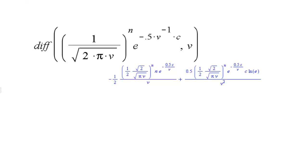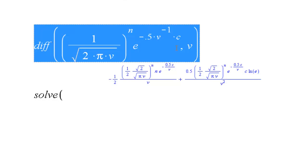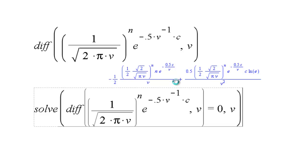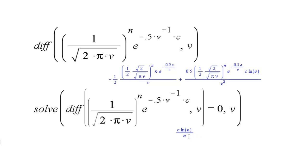So here's the derivative. What I want to do is take that derivative and set it equal to 0. I'm going to solve the equation — that derivative equals 0 — and tell it to solve for v. It tells me the only place where that derivative is 0 is c times the natural log of e. Natural log of e is just 1, so we just have c over n.